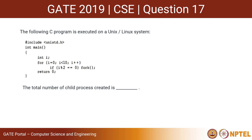Hello everyone. Today we are going to discuss this question which was asked in GATE 2019. The following C program is executed on a Linux or Unix system. This is the code and we have to find the number of child processes which are being created by this code.